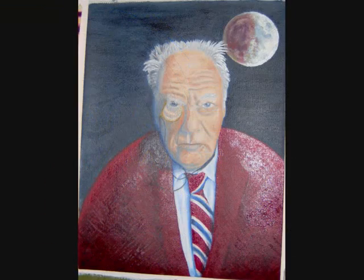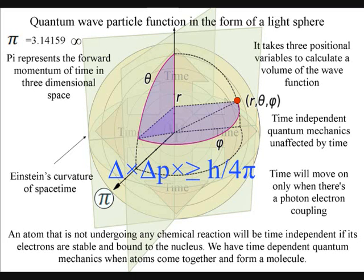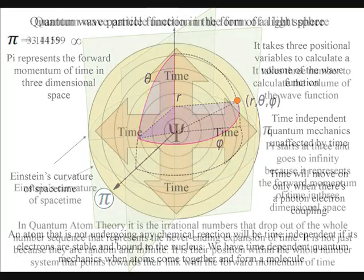We have Einstein's curvature of spacetime because of the spherical shape of the quantum wave-particle function. This is why we have pi in the equations, representing the shape of the wave-function in three-dimensional spacetime.